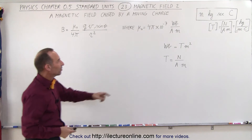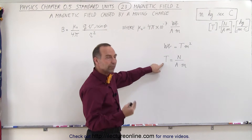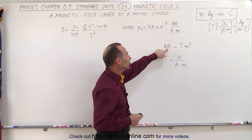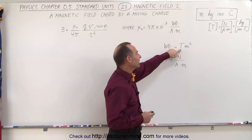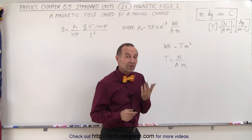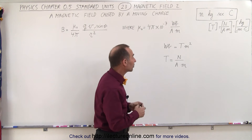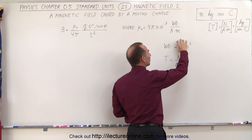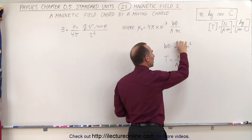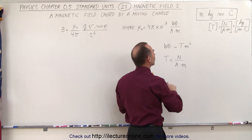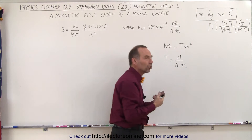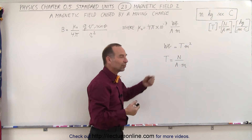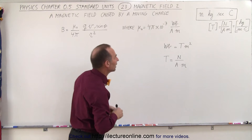We know that Tesla is the unit for the magnetic field strength. But what about Webers? Webers is equal to Tesla times square meters, which sounds like the units for magnetic flux, because magnetic flux is defined as the strength of the magnetic field in Teslas times the area in square meters. So Webers is the unit for magnetic flux, while Teslas are the unit for the strength of magnetic field.